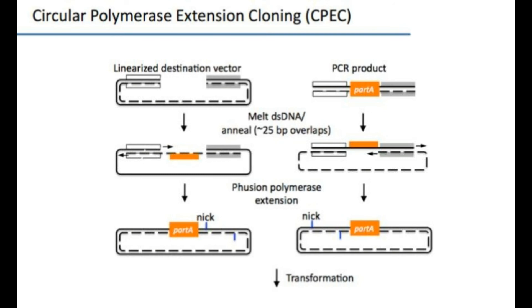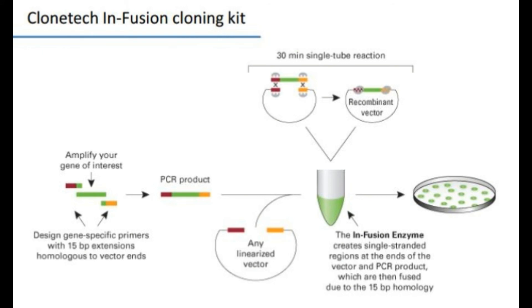The infusion cloning kit is a proprietary biochemical technique. A 15 base pair homology is needed and the reaction is performed by a patented recombinase — the infusion enzyme. Up to four fragments simultaneously are reported with 80% efficiency, though it depends on an expensive commercial kit. It begins with amplifying the gene of interest, designing gene-specific primers, creating the PCR product, and adding the linearized vector. A 30-minute single-tube reaction with the recombinase creates a single-stranded region at the end of the vector and PCR product, which are then fused due to the 15 base pair homology.